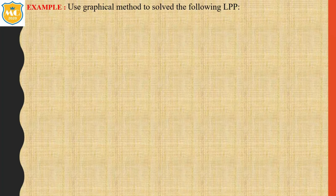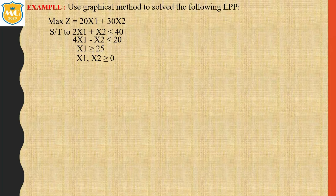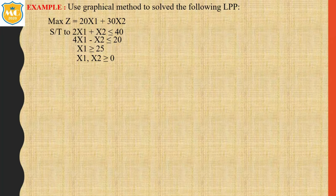Let's see an example. Use the graphical method to solve the following LPP: Maximize Z = 20x1 + 30x2, subject to constraints: first, 2x1 + x2 ≤ 40; second, 4x1 - x2 ≤ 20; third, x1 ≥ 25; and non-negativity condition x1, x2 ≥ 0.